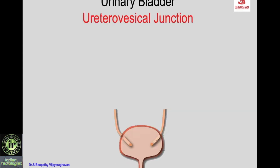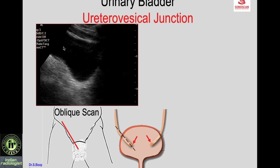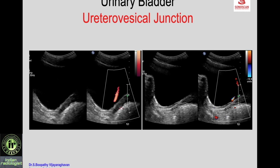Coming to the ureterovesical junction — on either side, the distal ureter runs obliquely to join the bladder. To see the UVJ, you must visualize the distal-most ureter by taking an oblique scan along that plane. When you do that, you see the bladder, the distal ureter, and the ureterovesical junction. With color Doppler, you can see the distal-most ureter with the jet from the UVJ, which identifies the junction. Then turn the probe for the left-side UVJ.